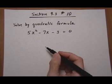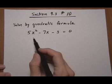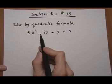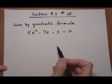Section 9.3, number 10. Solve the following equation by the quadratic formula: 5x squared minus 7x minus 3 equals 0.